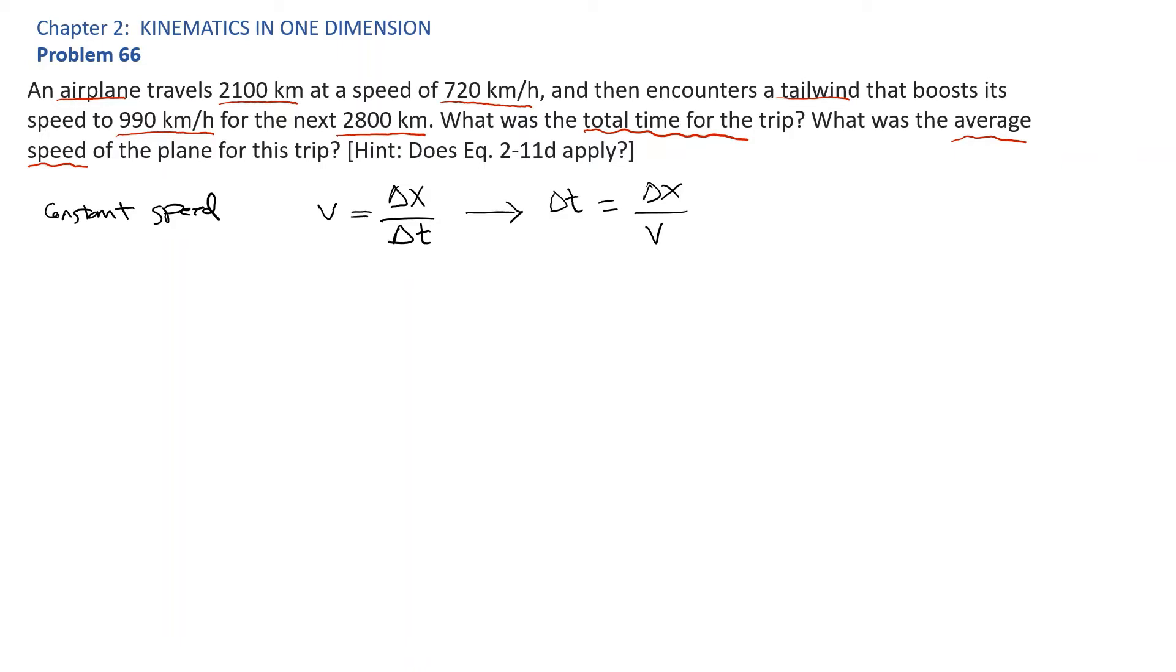There are two parts to this trip. For the first part, the plane travels 2100 km at a speed of 720 km per hour. So we have delta x1 is equal to 2100 km.